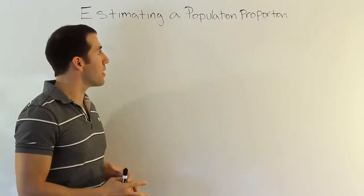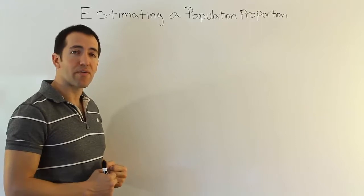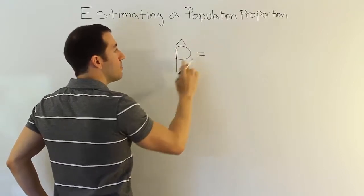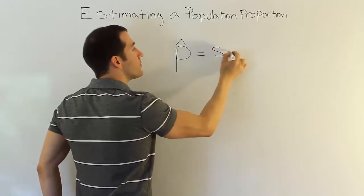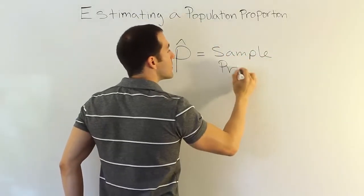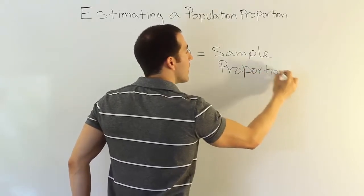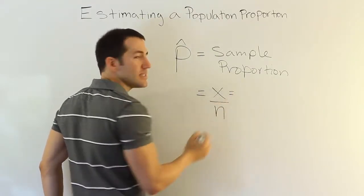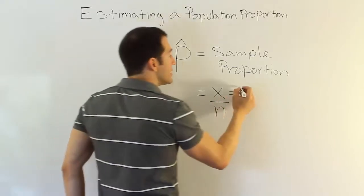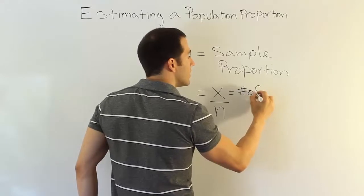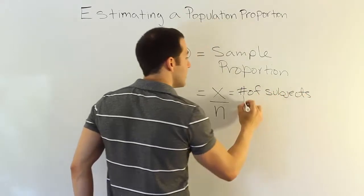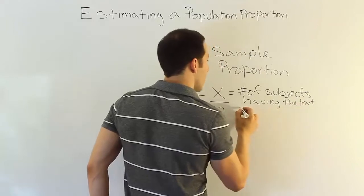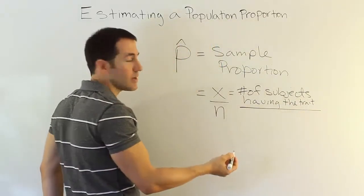So let's talk about how we're going to estimate this population proportion. We're going to basically form a confidence interval around something called the sample proportion. The sample proportion is P hat. P with a hat on top. He is the sample proportion. The other thing we want to say about this is it has a formula. And the formula is going to be x over n, where x is essentially the number of subjects having the trait that you're interested in over n, of course, is the total number of subjects for the sample size.